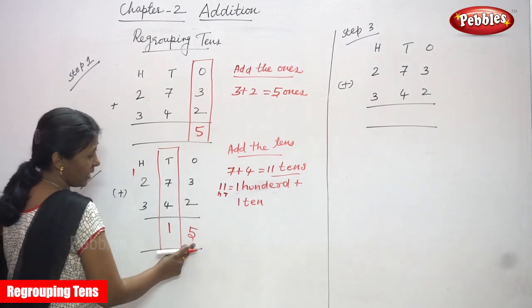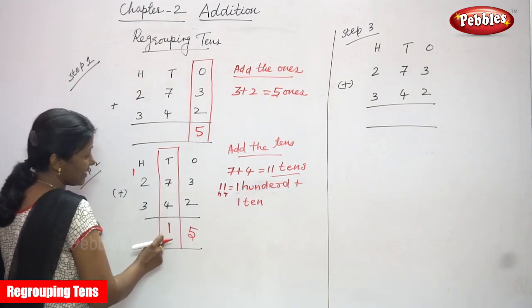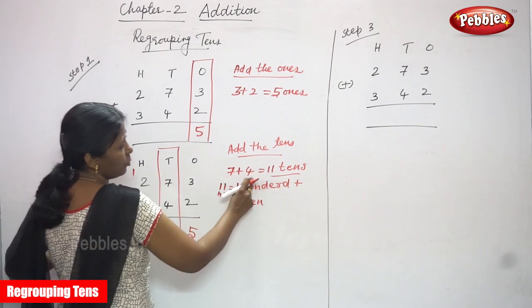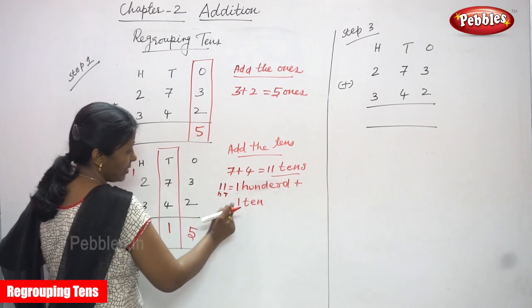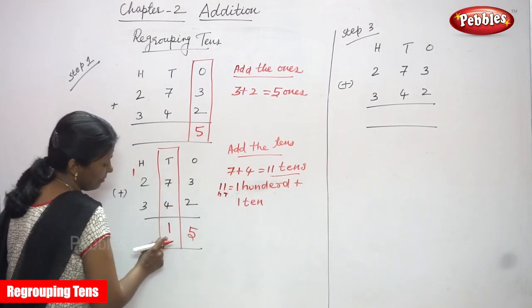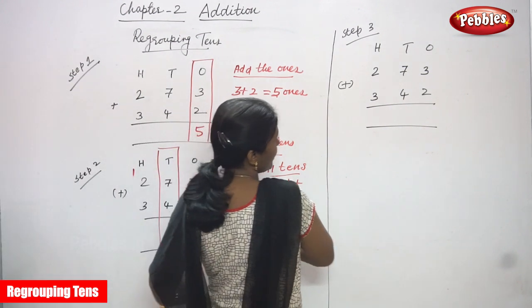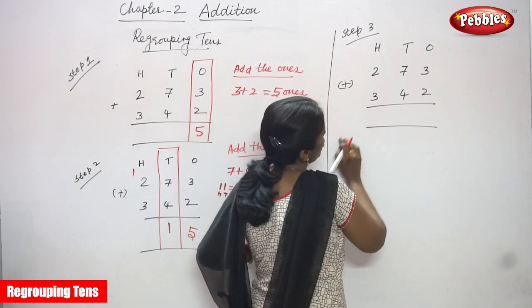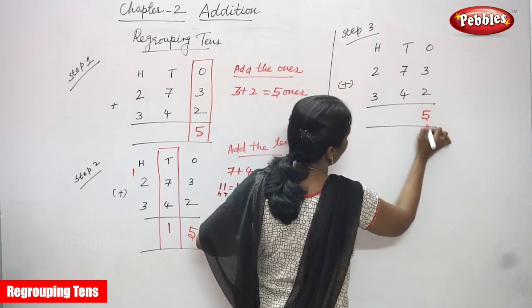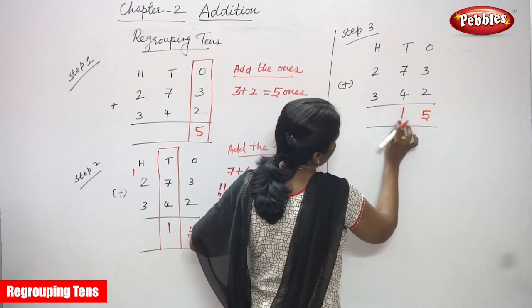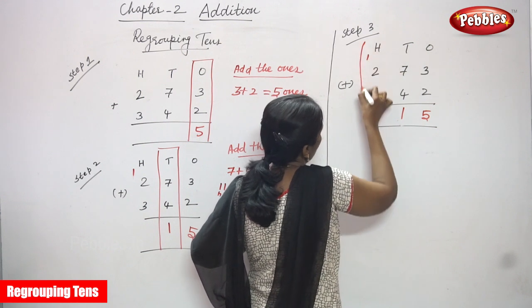Step two is now over. The ones place answer is five, and the tens place gives eleven from seven plus four — so one is written in the tens place and the carryover of one goes to the hundreds place. In the HTO (Hundreds, Tens, Ones) layout: ones place is five, tens place is one, and the carryover one goes to hundreds.